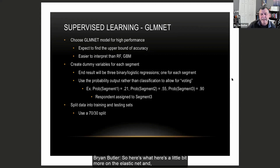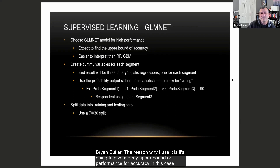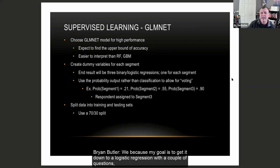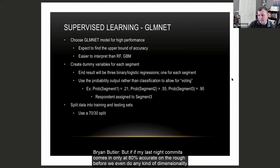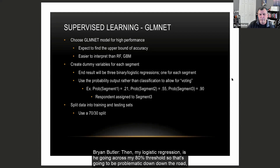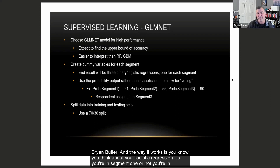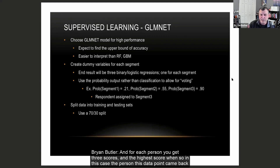Here's a bit more on the elastic net: the reason I use it is it gives me my upper bound of performance or accuracy. My goal is to get it down to a logistic regression with just a couple of questions. But if the elastic net only comes in at 80% accurate before any dimensionality reduction, then my logistic regression isn't going to cross the 80% threshold. The way it works: for each person you get three scores — probability you're in segment one, two, and three — and the highest score wins. So if the probability for segment three was 90%, it beats 55% and 21%, therefore they get assigned to segment three.